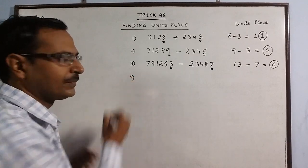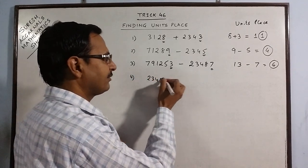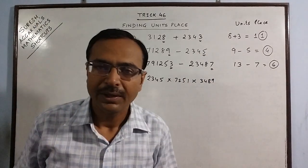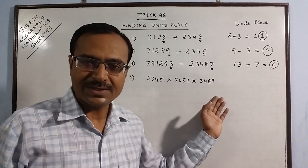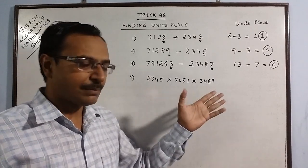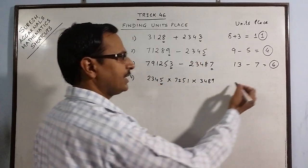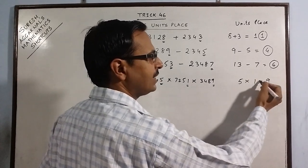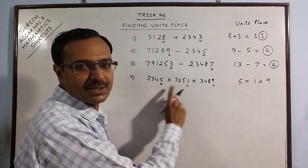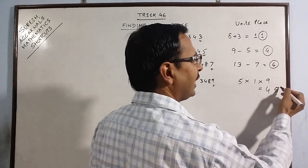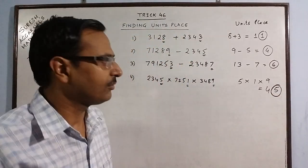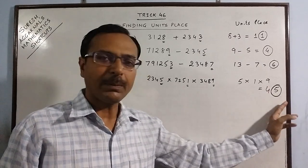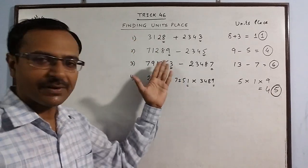Now, coming to product. Suppose you have 2345 multiplied by 7251 multiplied by 3489. This is a very large product and obviously you cannot multiply these numbers fully. What you do is just take the unit's place of the three numbers: 5, 1, and 9, and multiply these three. You get 45 and take the unit's place. So the answer is 5. In case of product, you just need to multiply the unit's places of the numbers to get the unit's place of the product.